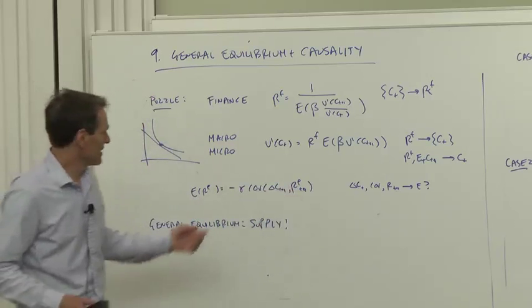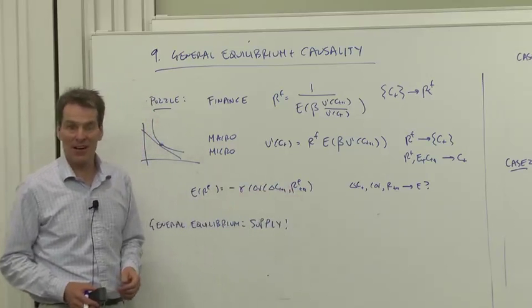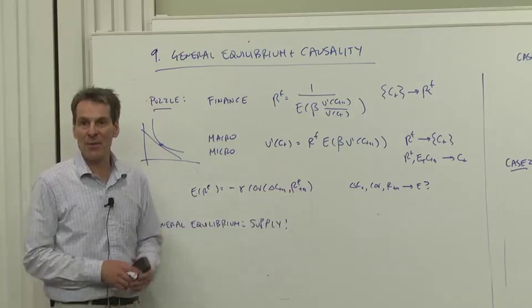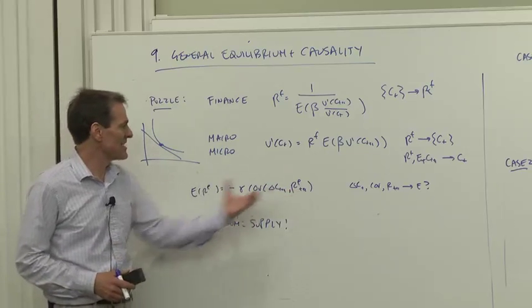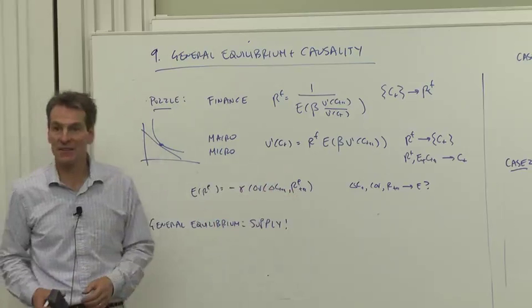But wait a minute. Consumption is an endogenous variable to the economy. Tomorrow's return is primarily determined by tomorrow's price. That's going to be the endogenous variable tomorrow. What are we doing saying that's exogenous determining expected returns?